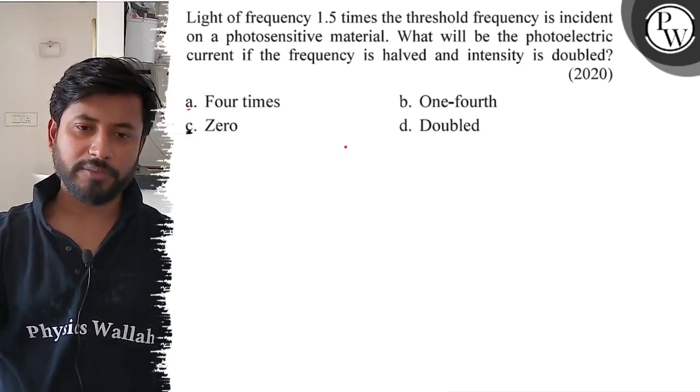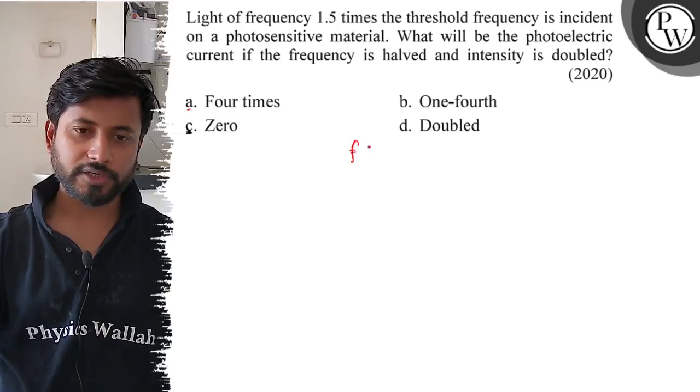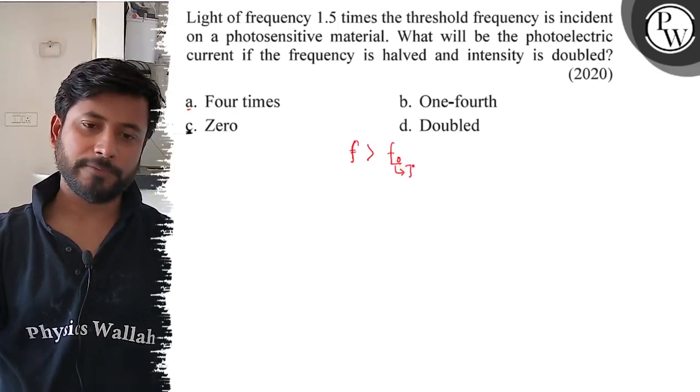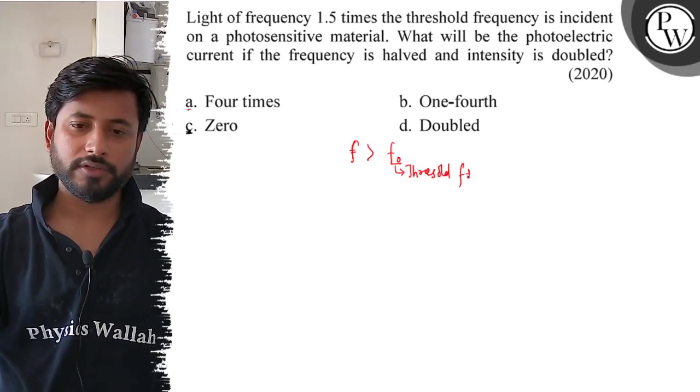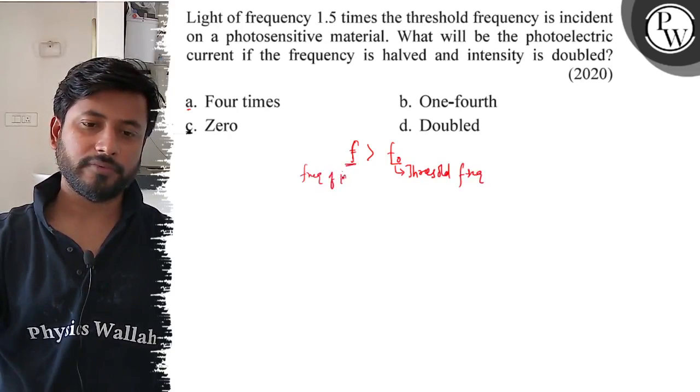For photoelectric emission, the frequency should be greater than the threshold frequency. The incident photon frequency will be greater than the threshold.